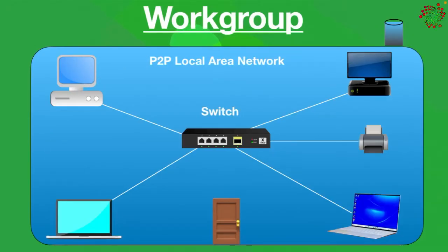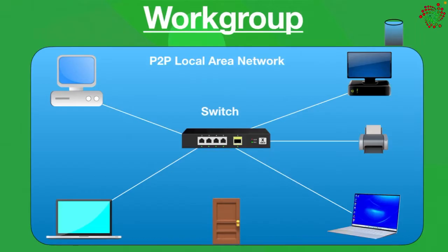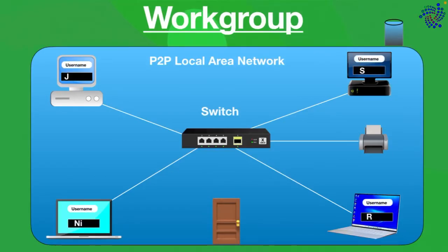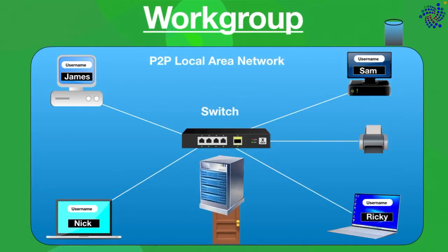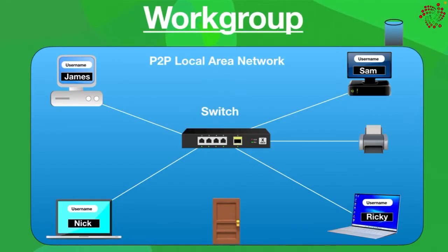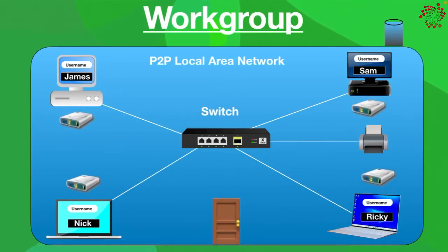In this kind of network, computers can allow each other to access files, printers, and other resources. In order to do this, every user must have an account on each of the workgroup's computers they require access to. Because workgroup is a peer-to-peer networking model, it removes the need of a server for authentication. Each user can manage his computer independently, and there is no centralized database — each device has its own dedicated storage.